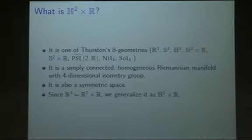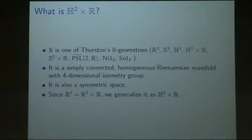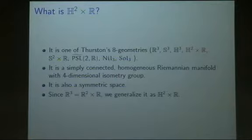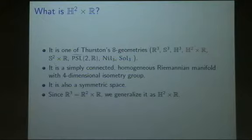Let me start part one. I want to explain what is H² × ℝ. Yesterday, Professor Jun Sang Park already explained very well what is H² × ℝ. H² × ℝ is one of Thurston's eight geometries. The other geometries include three space forms, H² × ℝ, S² × ℝ, the PSL₂ covering, the Heisenberg group, and SOL₃. I focus on H² × ℝ, which is a simply connected, homogeneous Riemannian manifold with a four-dimensional isometry group — three translations about H² and one translation about the vertical ℝ axis. H² × ℝ is also a symmetric space.